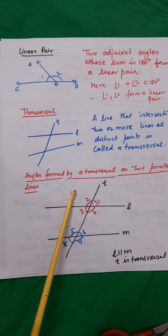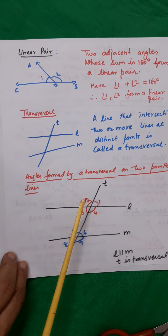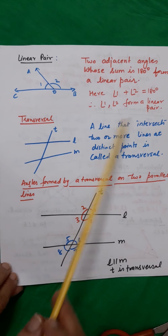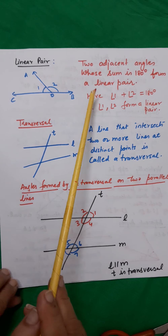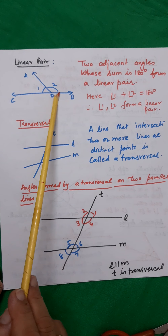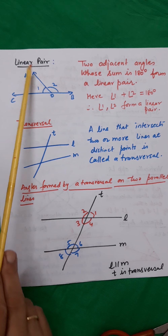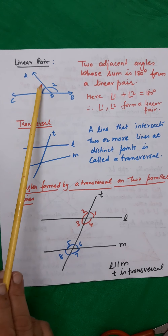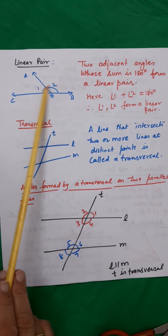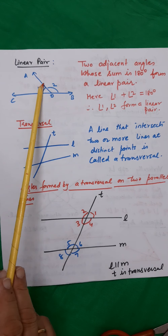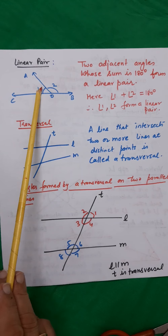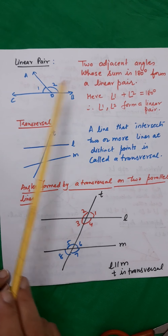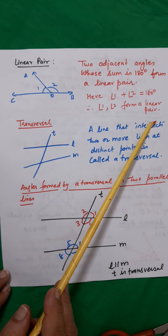Linear pair — two adjacent angles whose sum is 180 degrees form a linear pair. You can see an example here. I have drawn one ray here. You have angle 1 and angle 2. The sum of these two angles is 180 degrees. Therefore, we say they are forming a linear pair.